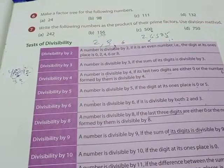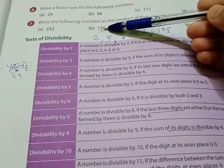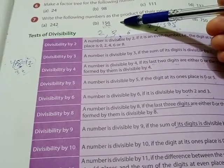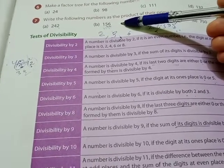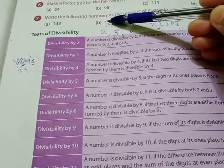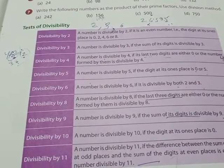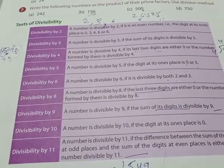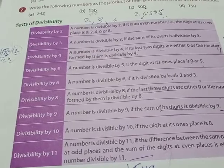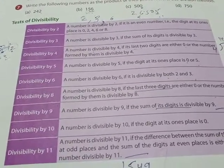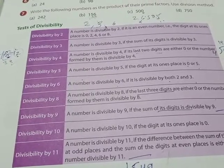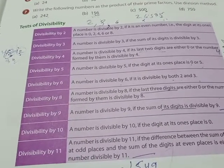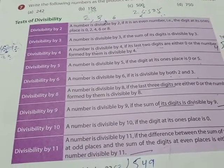For 156, add the digits: 1 + 5 + 6 = 12. Is 12 in the table of 9? No, so 9 is not a factor of 156. To confirm any number has 9 as a factor, find the sum of its digits, and that sum must appear in the table of 9. If the answer is in the table of 9, then 9 is the factor of the given number.